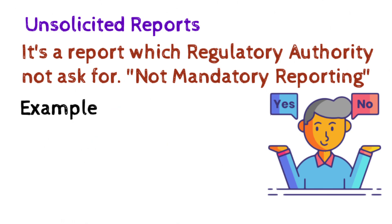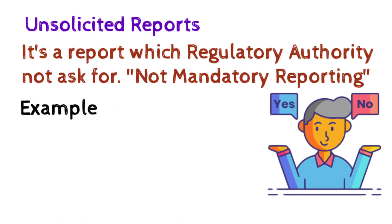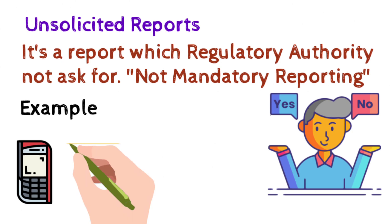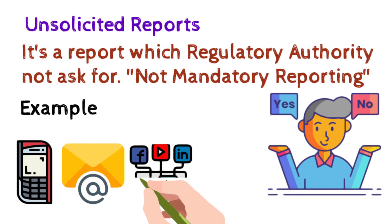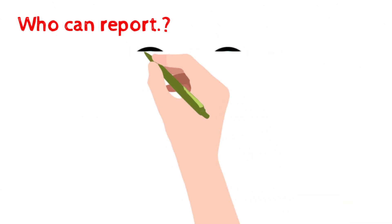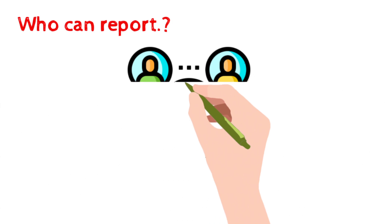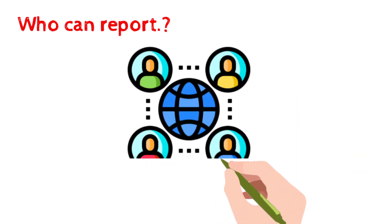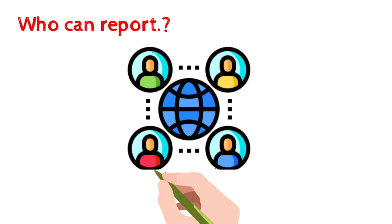Examples of unsolicited reports include any reports received from a phone call, through an email, from social media, or through fax, etc. A question may arise: who can report an adverse event associated with any drug to a pharma company? The answer is, anyone can report an adverse event of any drug to the pharma company responsible for manufacturing that drug, irrespective of qualification, age, gender, etc.